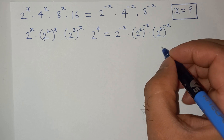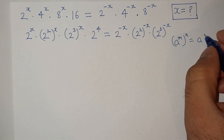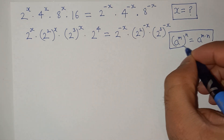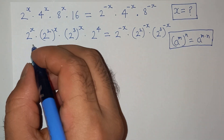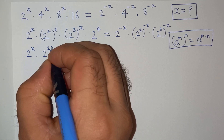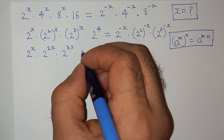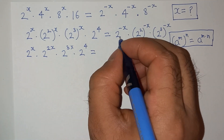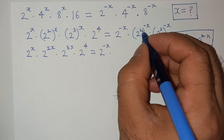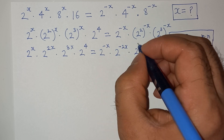Now we know this exponential rule which is a power m power n equals to a power m multiplied by n. So we are going to apply this rule over this equation. So we have 2 power x, multiplied 2 power 2x, multiplied 2 power 3x, multiplied 2 power 4, equals to 2 power minus x, multiplied 2 power minus 2x, and 2 power minus 3x.